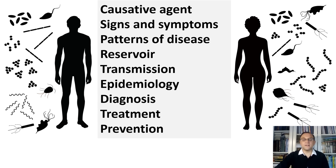In summary, the main disease characteristics to cover when describing an infectious disease are: causative agent, signs and symptoms, patterns of disease, reservoir and transmission, epidemiology, diagnosis, treatment, and prevention.